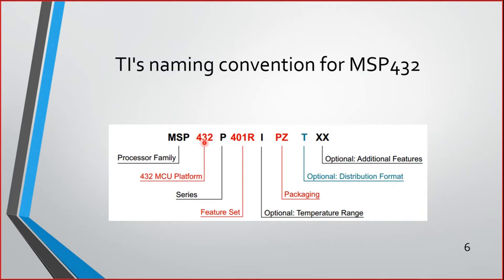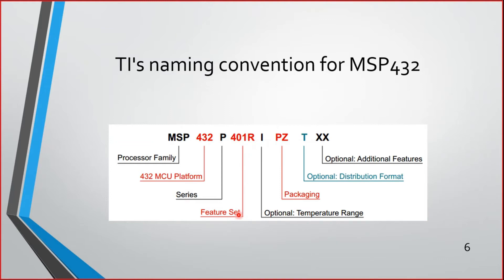MSP-432 platform name — the number 432 stands for the 432 platform. MSP-432 has Cortex-M4, while MSP-430 has a lesser capability 16-bit processor. The platform number decides which core is present in the controller. The next letter P stands for the series — specifically P stands for performance microcontroller.